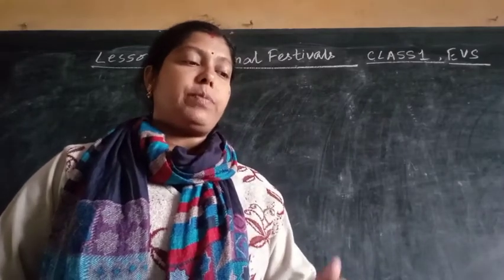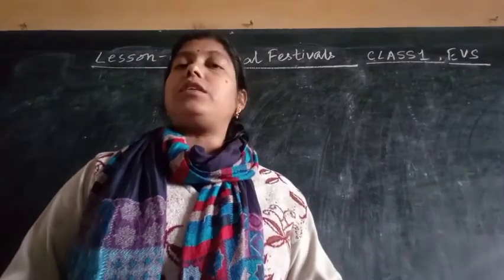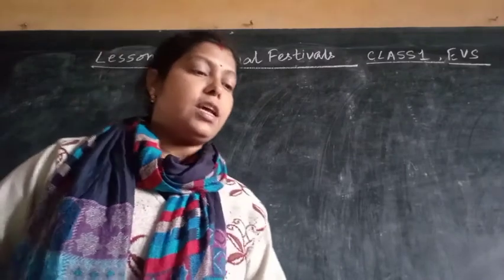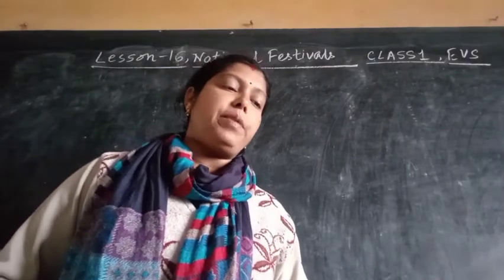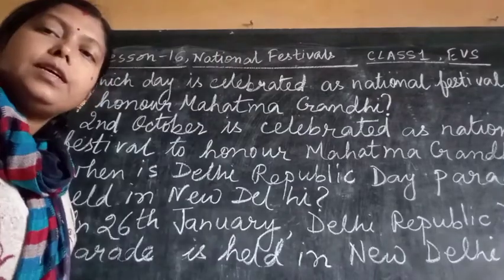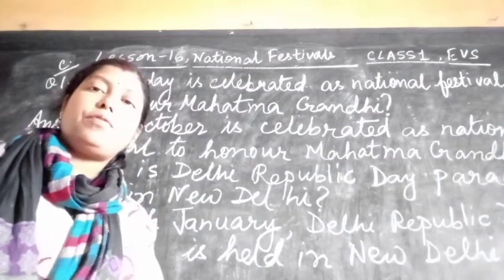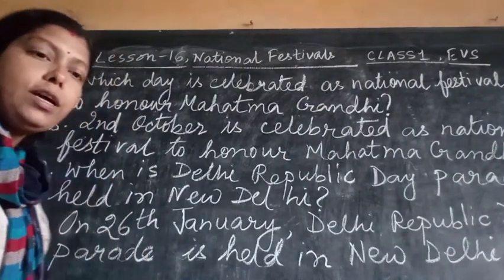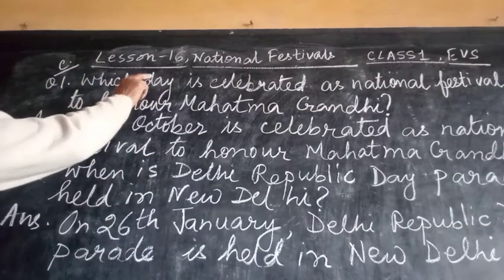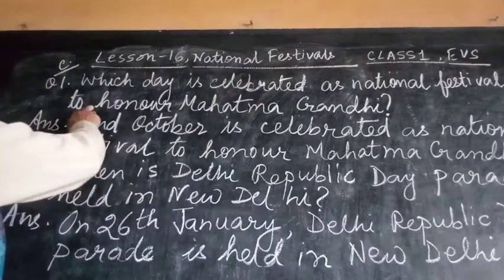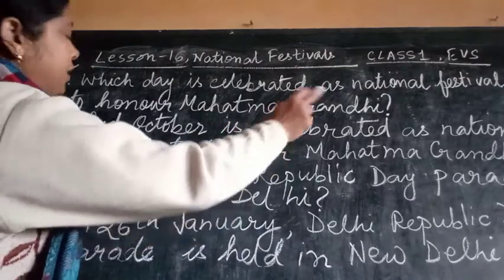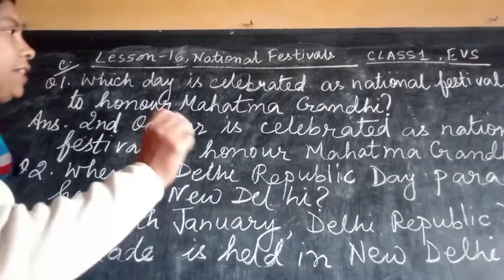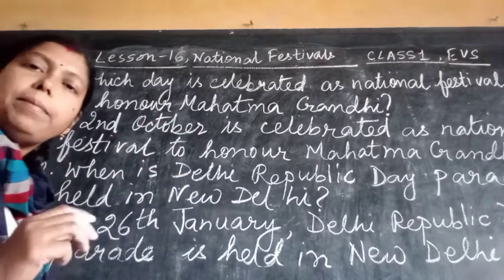Once again, please see Exercise B: the first picture is of Independence Day, the second picture is of Gandhi Jayanti, and the third picture is of Republic Day. Now we are going to do the question answers. Which day is celebrated as a national festival to honor Mahatma Gandhi? 2nd October is celebrated as a national festival to honor Mahatma Gandhi.